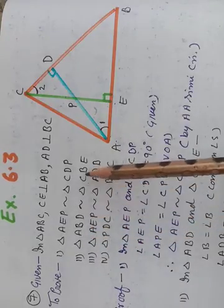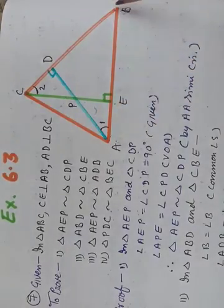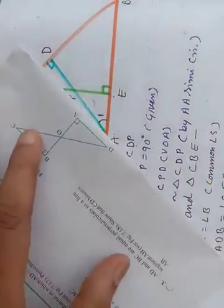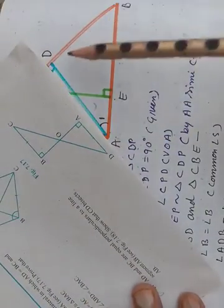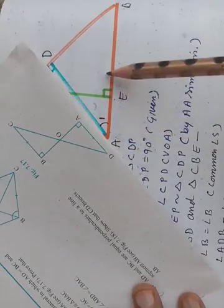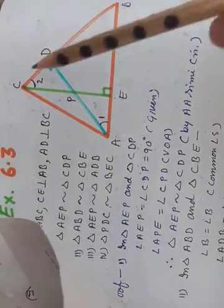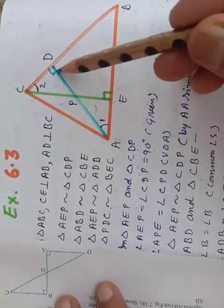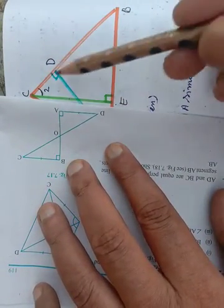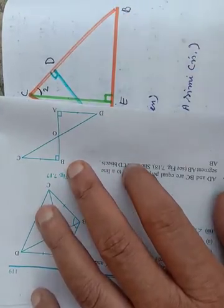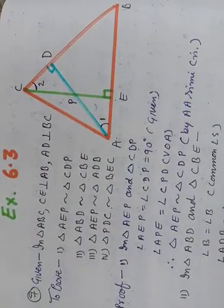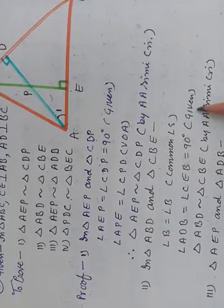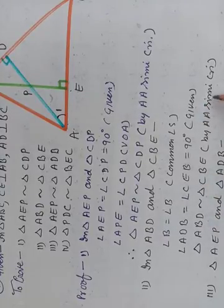Now we check triangles ABD and CBE. Triangle ABD — just check this portion here. And the other triangle is CBE. In triangle ABD this angle is 90 degrees, and in the green triangle CBE this angle is also 90 degrees, because both are perpendiculars. And angle B lies in both triangles — it is a common angle. So we write: angle B = angle B (common angle). Hence these two triangles are similar by the Angle-Angle similarity criterion.